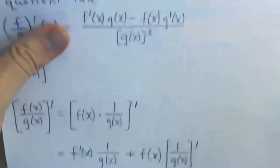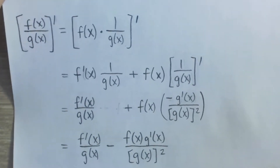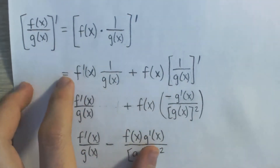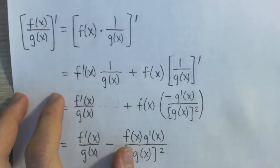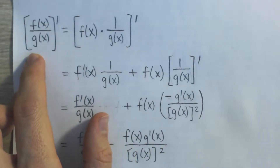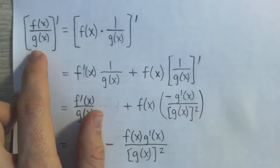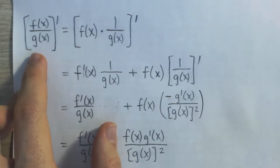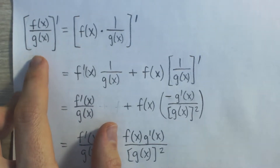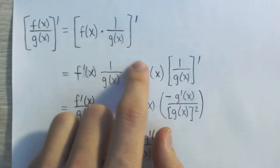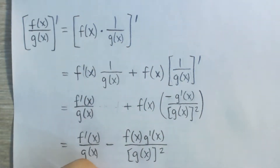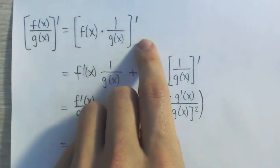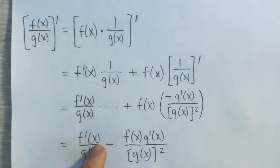So how I'm going to prove this is by using the product rule and the reciprocal rule. We're going to rewrite f of x over g of x as a product of two things, so we can take advantage of the product rule, which hopefully came before this rule. So we're going to rewrite it as f of x times 1 over g of x.